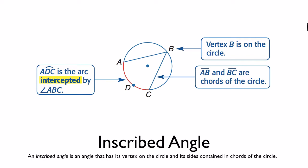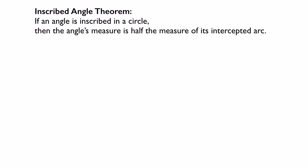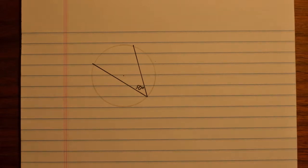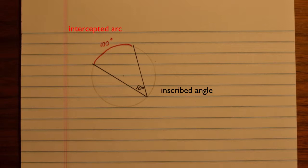That brings us to our first theorem, which states if we have an inscribed angle, then the angle's measure is half the measure of its intercepted arc. So if we have an inscribed angle of 50 degrees, that tells us the intercepted arc is 100 degrees. The angle is always half as big, or the arc is always twice as big.